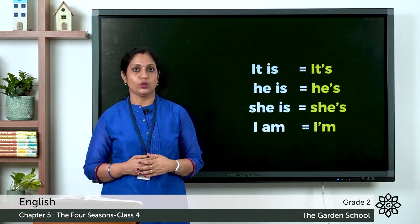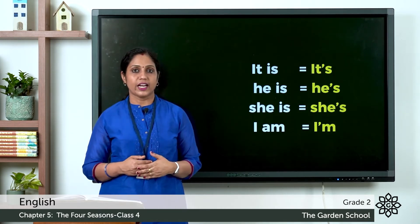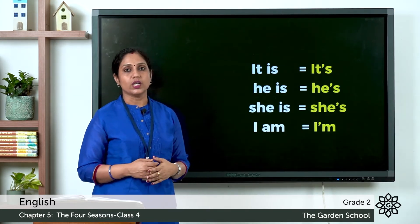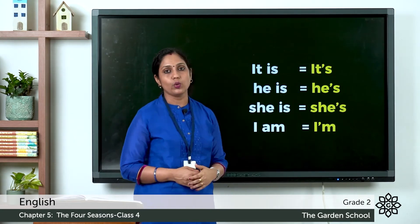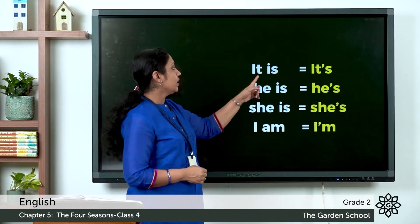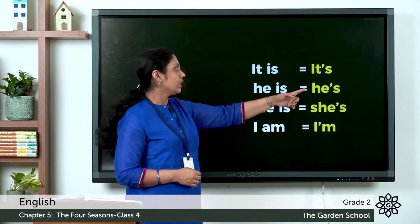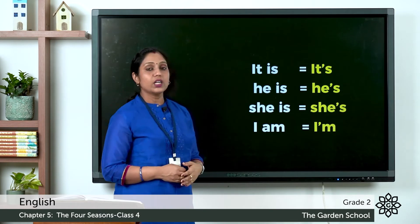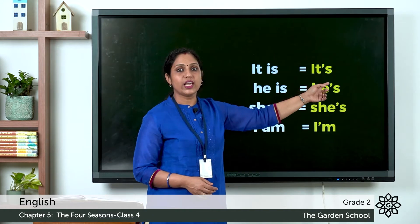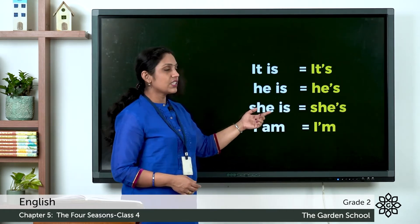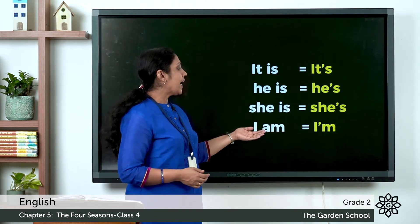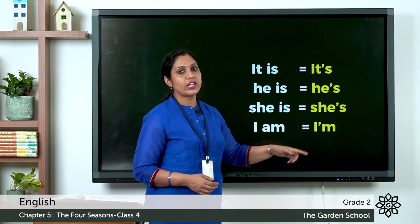You can write down these words in your notebook under the heading 'Contractions.' It is becomes it's — I-T apostrophe S — and the letter I is missing. He is becomes he's — H-E apostrophe S. She is becomes she's — S-H-E apostrophe S.